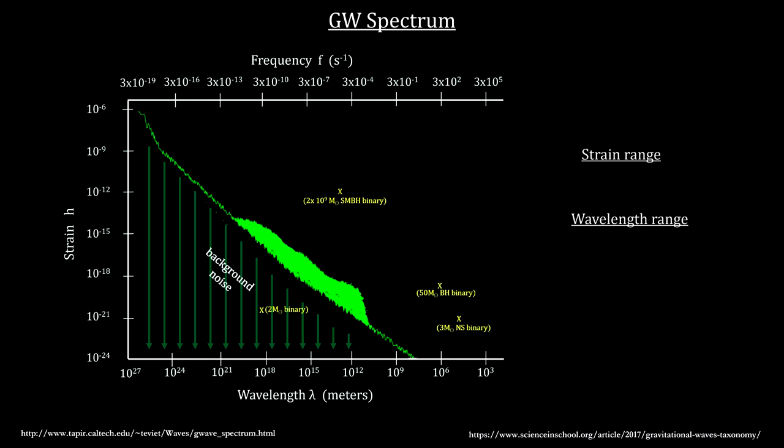Also, note the expanse covered by the two axes. The strain is always a small number, but the top value of 10 to the minus 6 is a billion trillion times larger than the lower value of 10 to the minus 24. And the wavelength goes from a thousand meters on the far right, up to the diameter of the visible universe on the left.